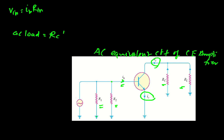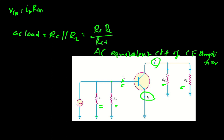The AC load is given by RC parallel to RL, that is: RAC = (RC × RL) / (RC + RL). This is the AC load of the AC equivalent circuit of the common emitter transistor amplifier.